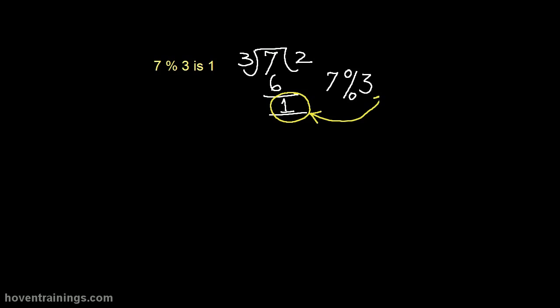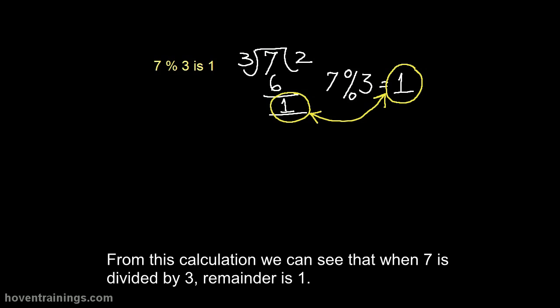Here 7 modulus 3 is 1. From this calculation we can see that when 7 is divided by 3, remainder is 1.